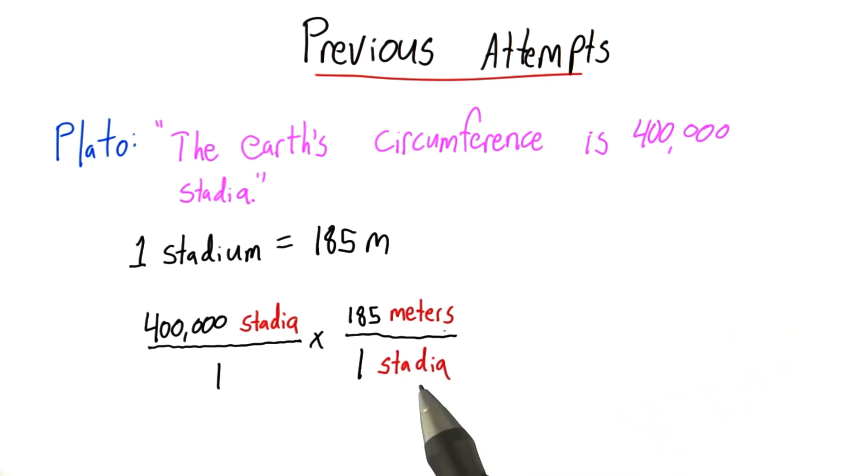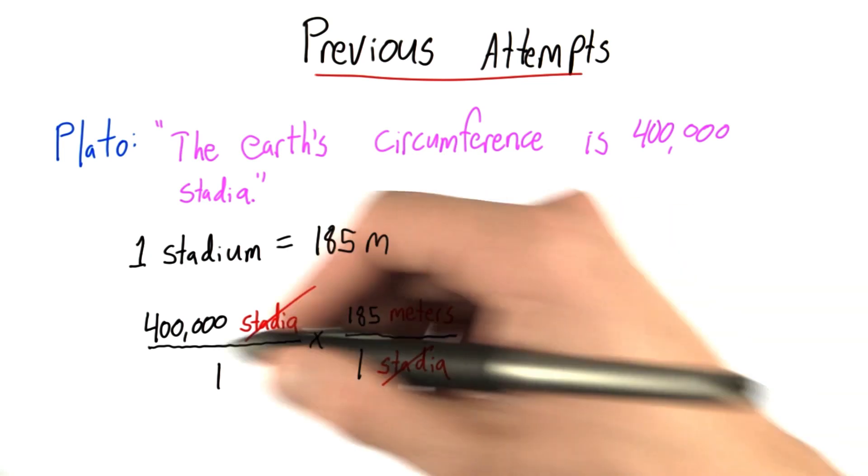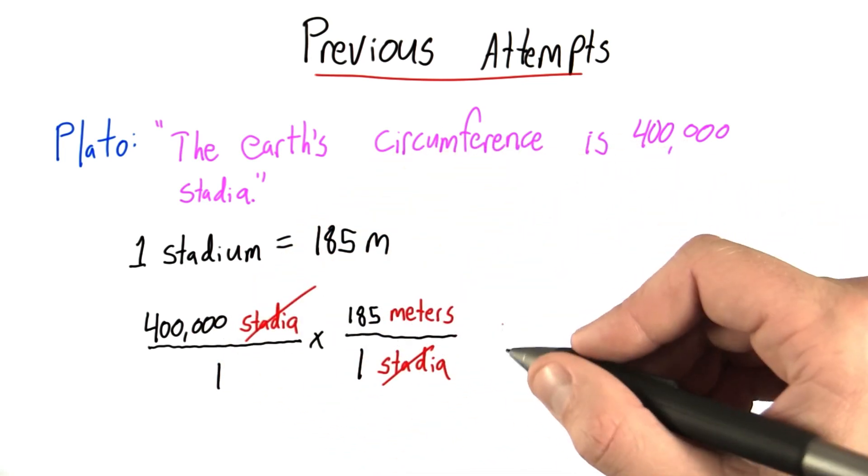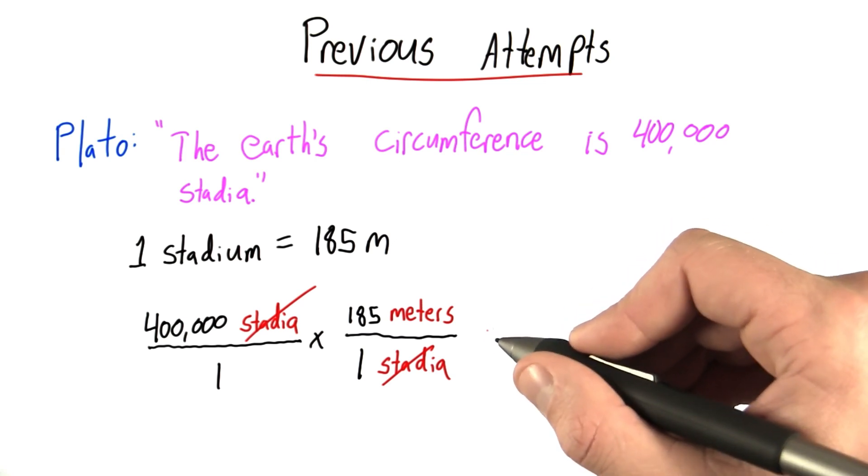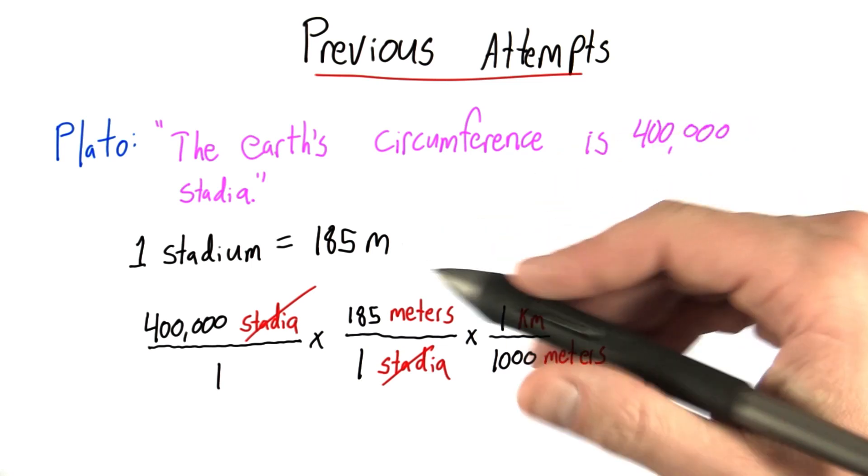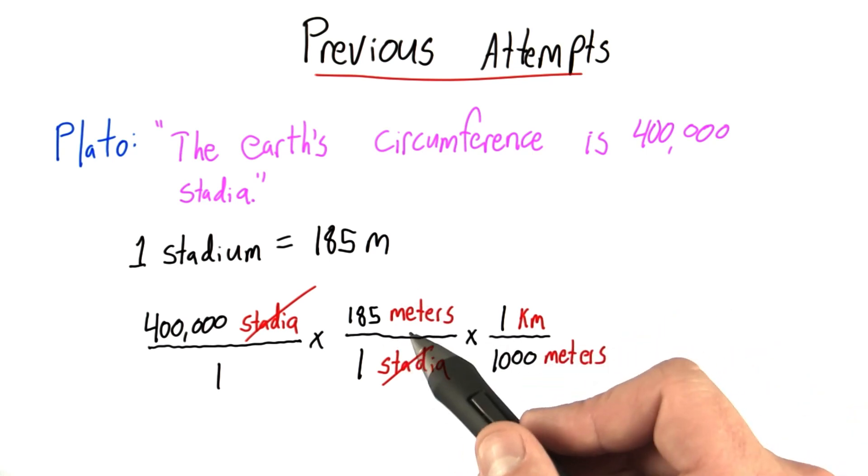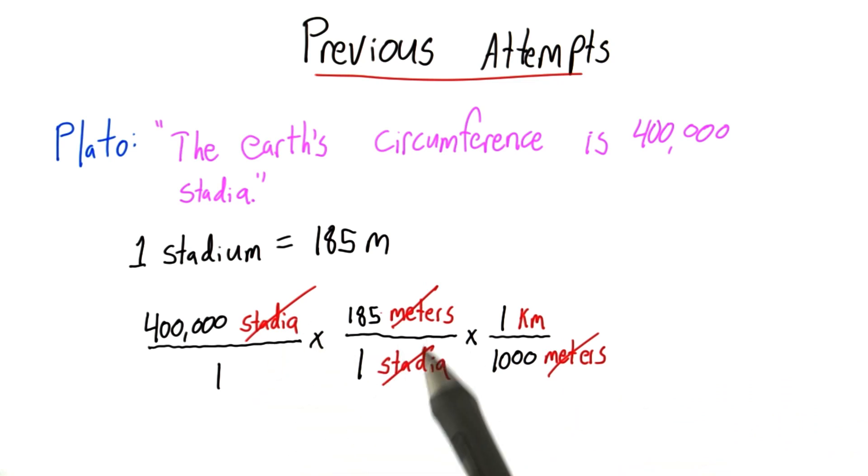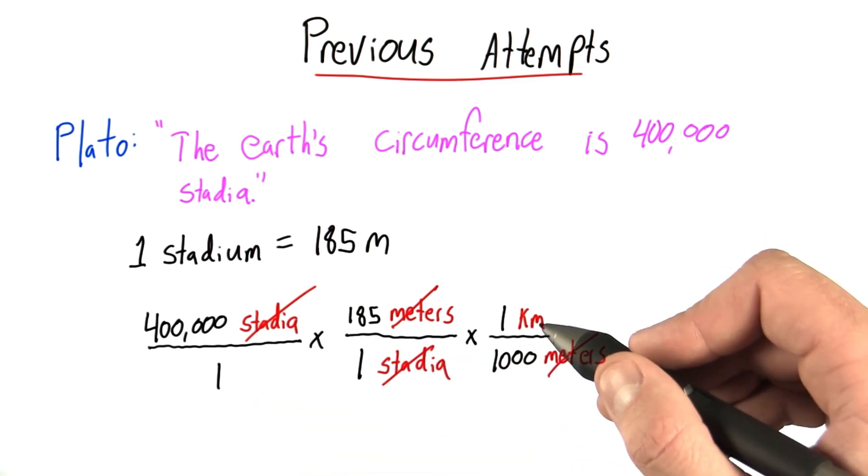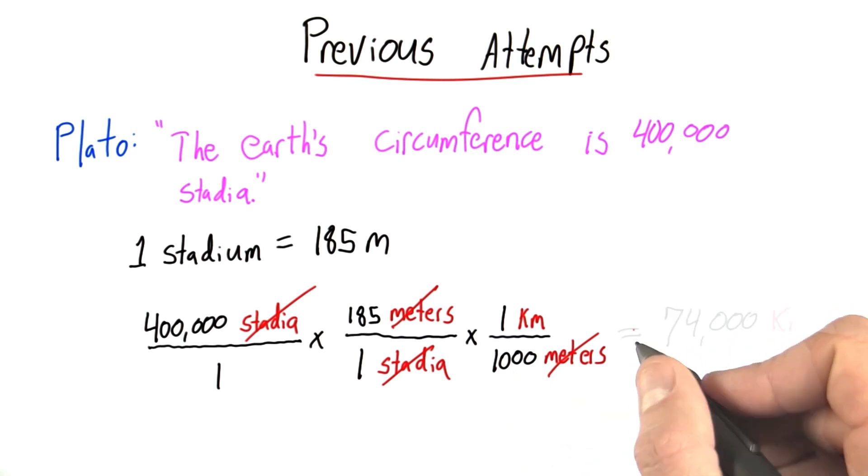So, the interesting thing about this is that stadia appears here and it appears here, numerator and denominator, so we can cancel. We now have a number that's represented as meters, 400,000 times 185 meters. But that's not exactly what I want either, so we'll need to use another conversion factor. And since I know that there are 1,000 meters in one kilometer, I can write this conversion factor. Notice that I put meters in the denominator, so that it will cancel with the meters in the numerator over here. We can see all of the units have canceled, all I'm left with are kilometers, and to carry out this calculation, I do 400,000 times 185 times 1 over 1,000. And that gives me a result of 74,000 kilometers.